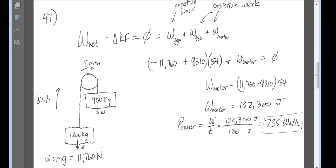The work done by gravity is a constant force times distance, so the weight of 1,200 kilograms is 11,760 newtons. The weight of 950 kilograms is 9,310 newtons, and multiply that times the distance, 54 meters, that the elevator and the counterweight both move, will give me the work done by each of those forces.